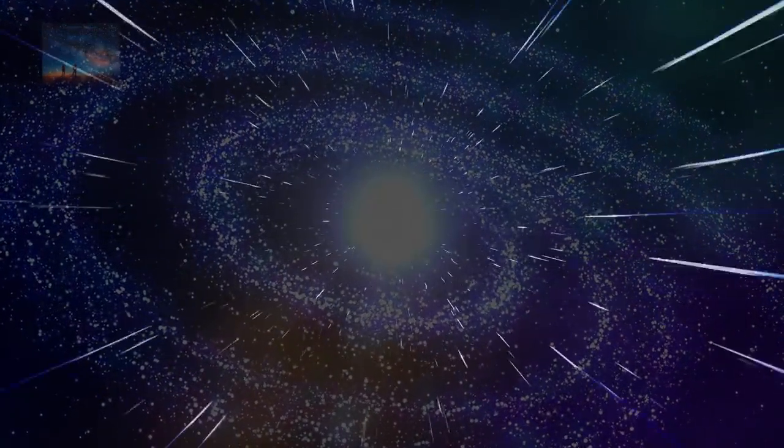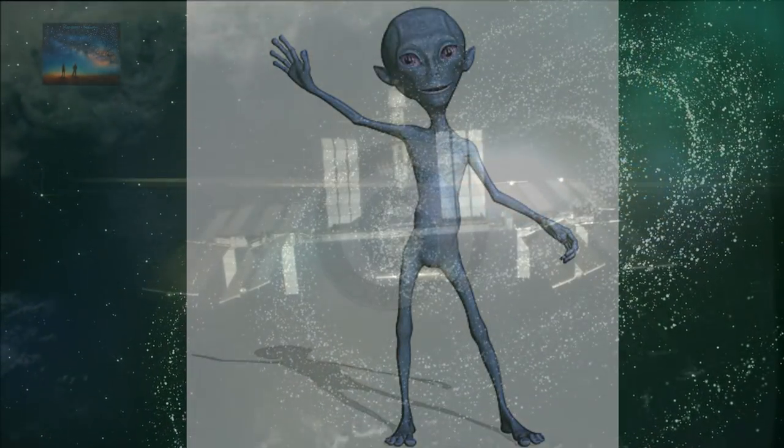If a scientist on a planet two hundred light years away had a powerful enough telescope that he could view activities on Earth, he wouldn't see us waving back with our own technology, but life as it was two centuries ago.